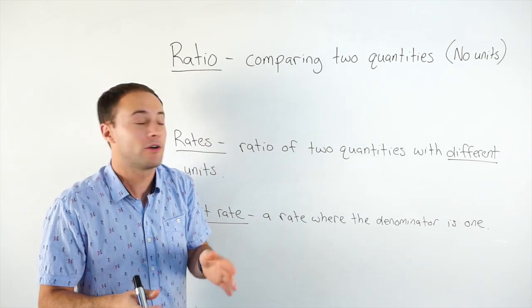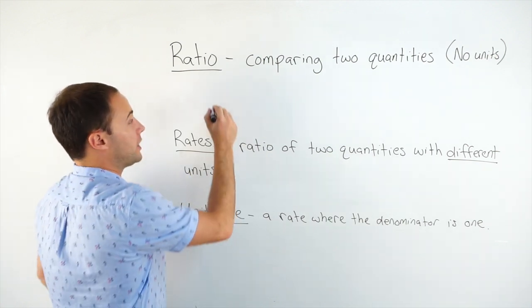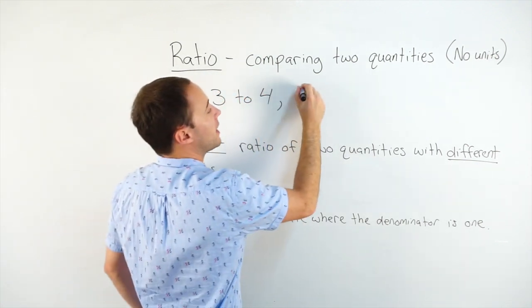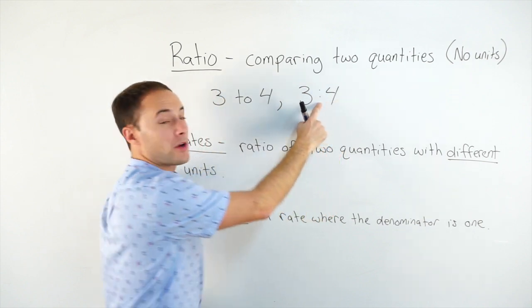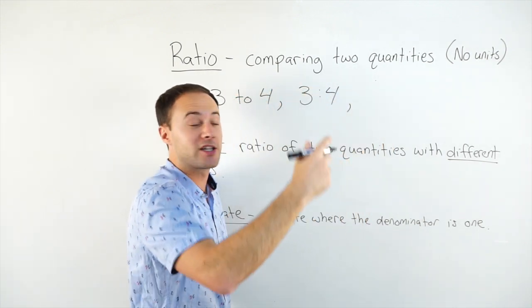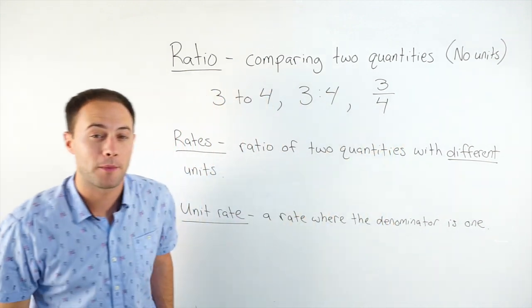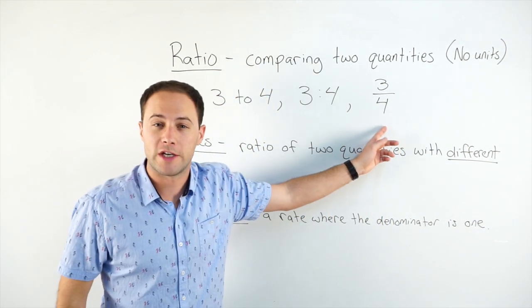If we were doing the ratio of three to four, we could write three to four, spelling it out. We could write three to four like that with a colon, or we could write it as a fraction where three would be in the numerator and four would be in the denominator. Those are all ratios.